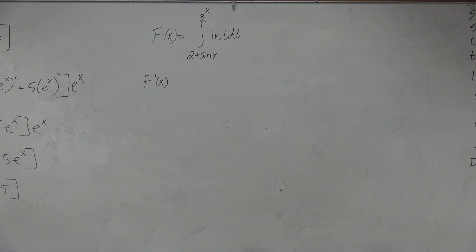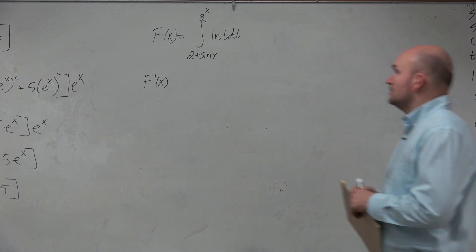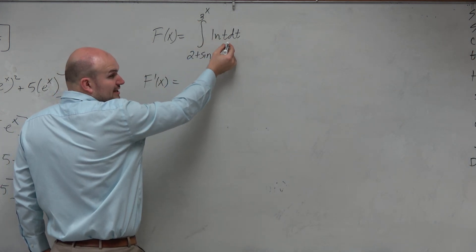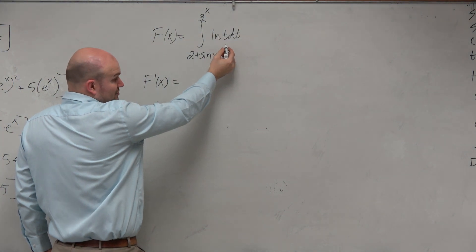If we want to find the derivative of this integrand, then all I've basically got to do is plug in my top function into ln of t, and then multiply that by the derivative.